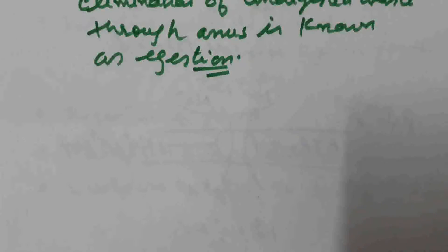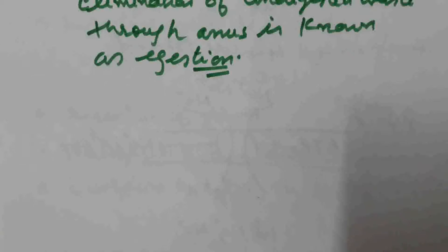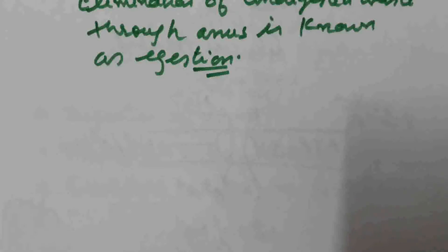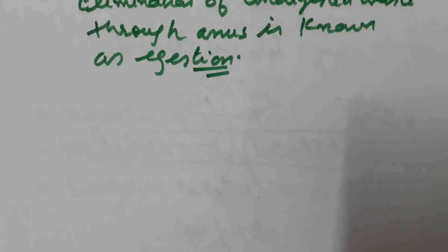Undigested waste from the small intestine enters into the colon part of the large intestine. The function of the colon is to solidify undigested waste and convert it into faeces by absorbing water and mineral salts. These faeces reach the rectum; after receiving the faeces, the rectum dilates, creating the urge to defecate through the anus — the process known as defecation. This is all about this video. Thank you so much.